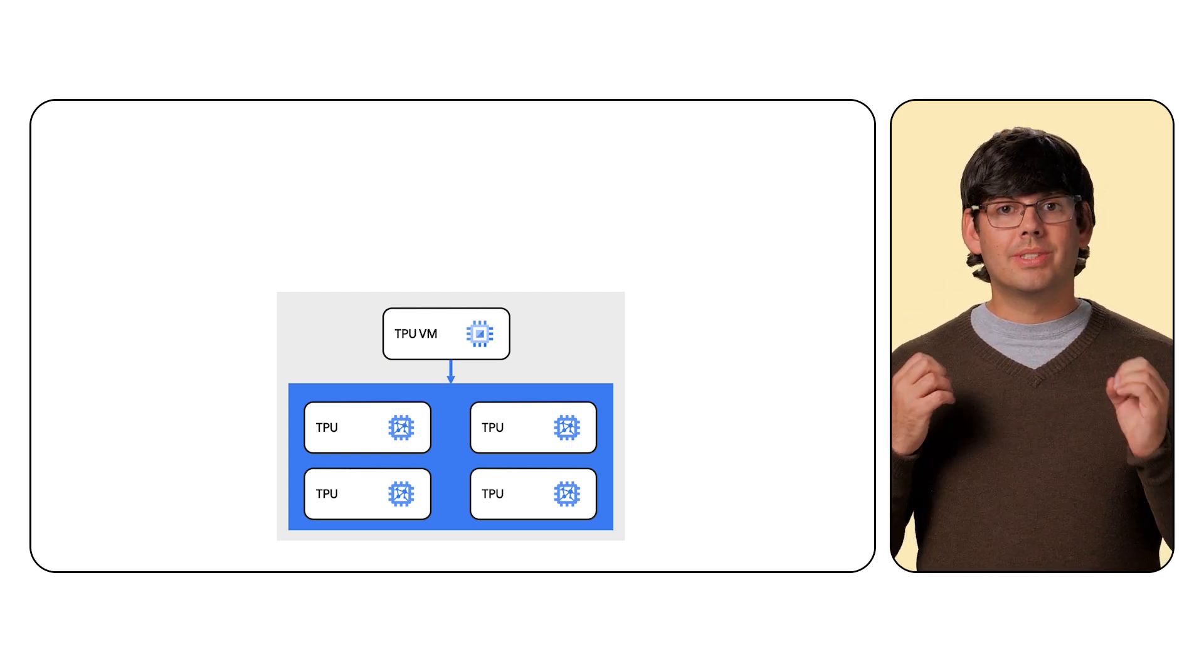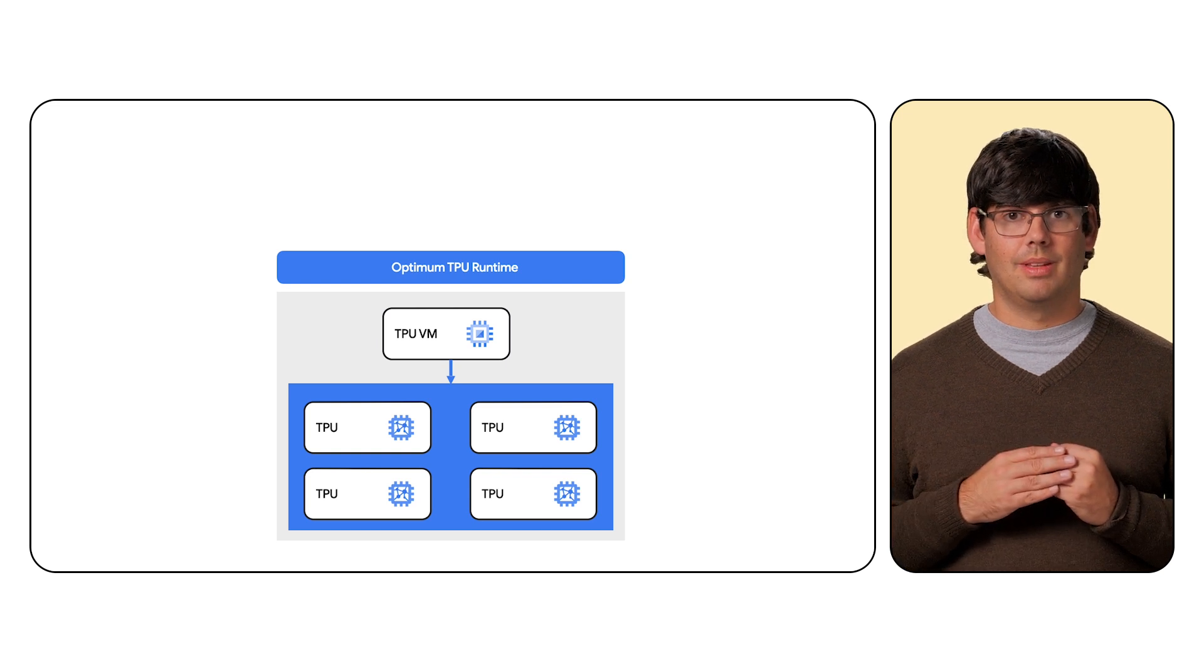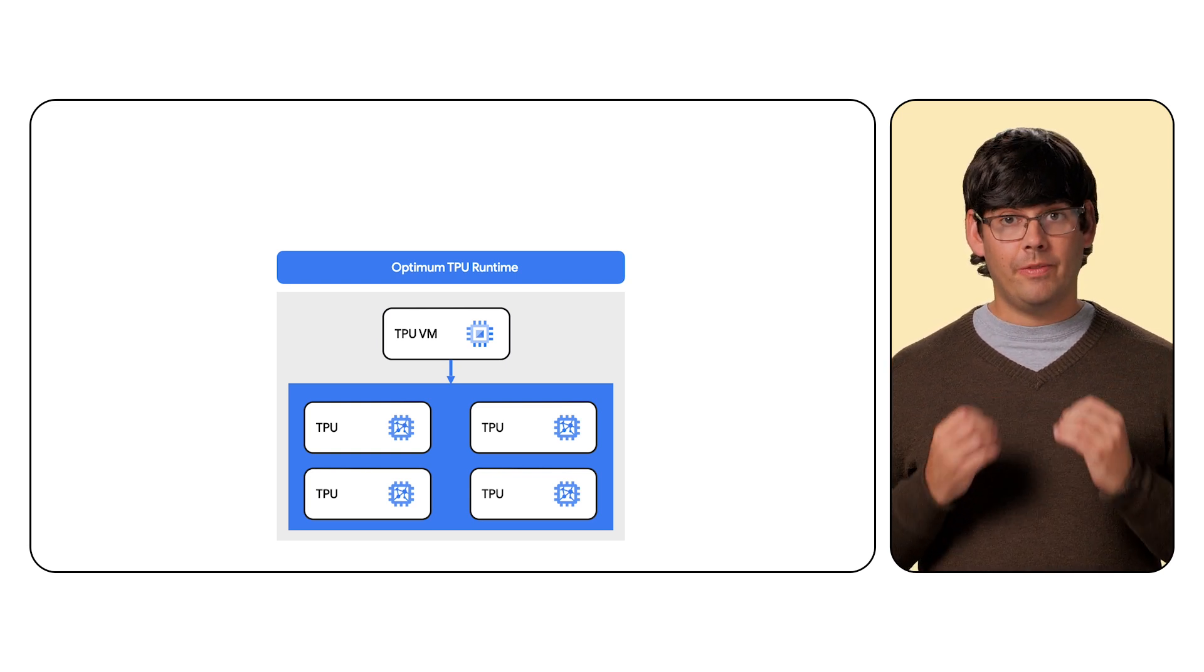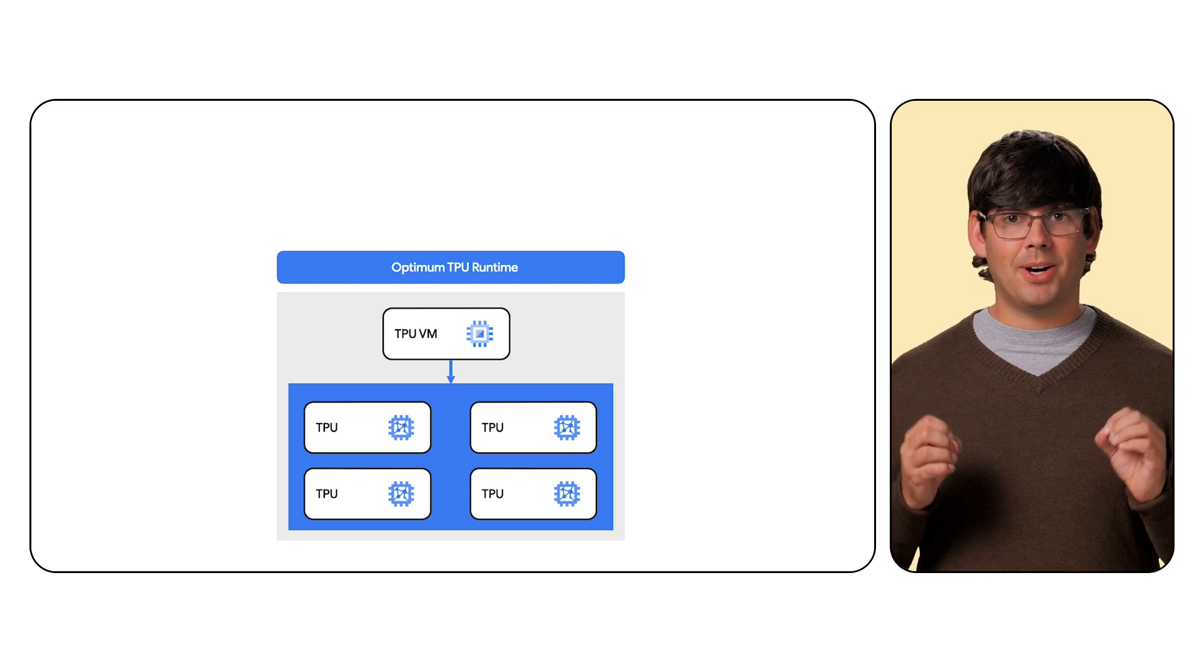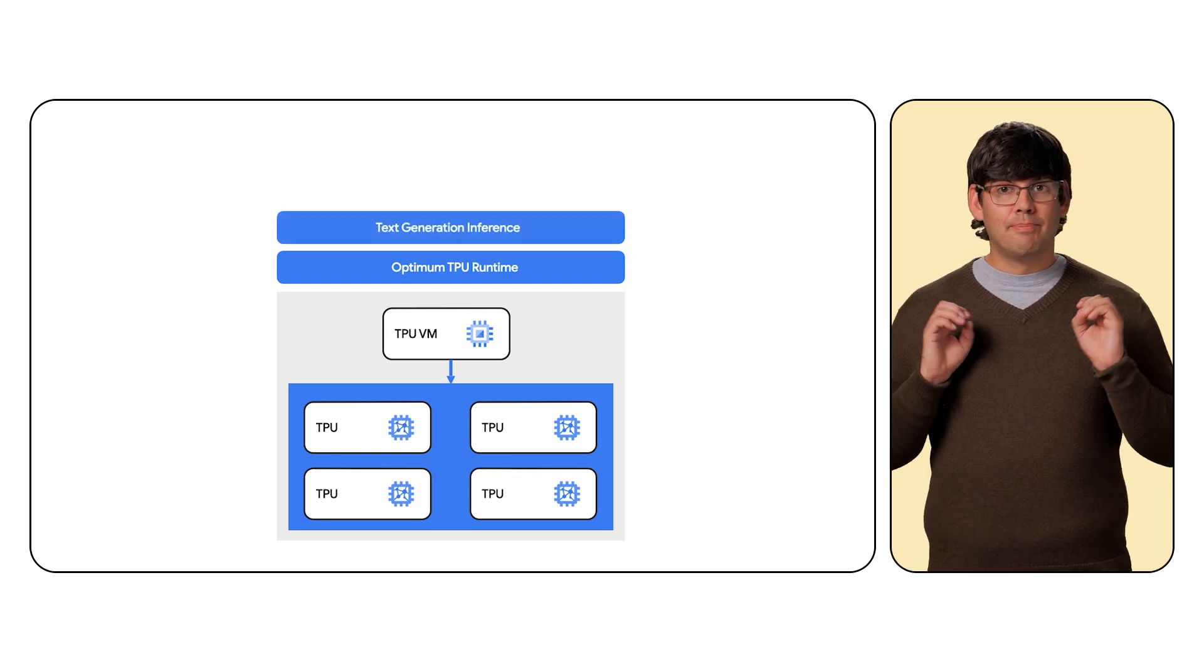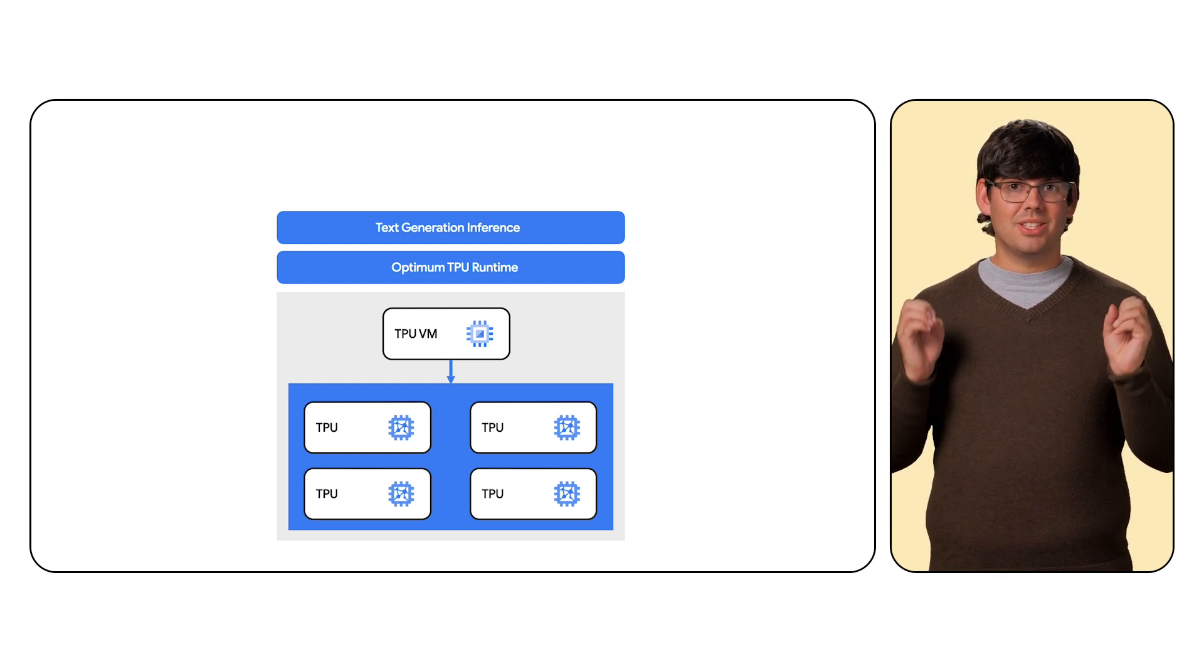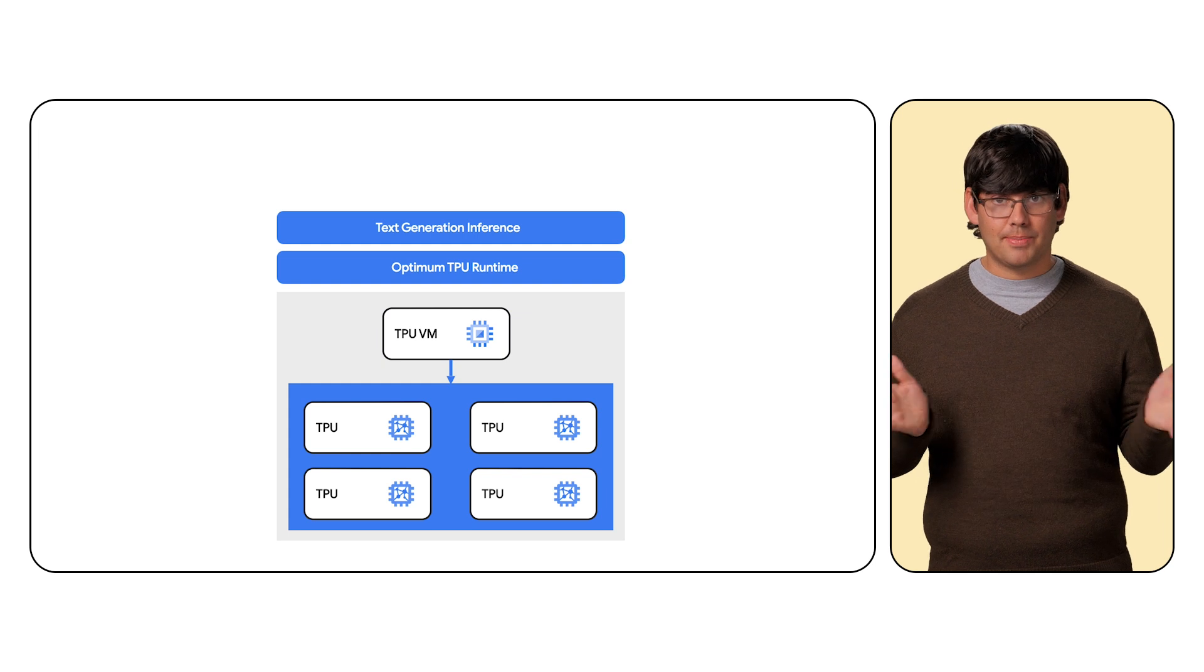For the next part, we will download the Optimum TPU Docker image onto the VM. We will then set two environment variables, one containing our Hugging Face token so that we can download the model that we want to run from the model garden. The other is the model that we want to download, which in this case is Gemma 2, which provides either a 2 billion or 9 billion parameter option.